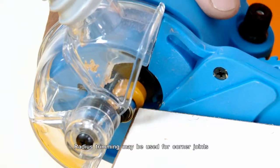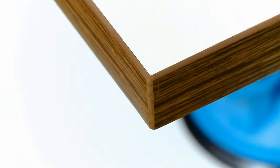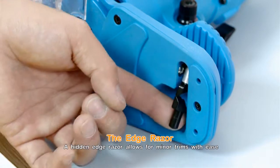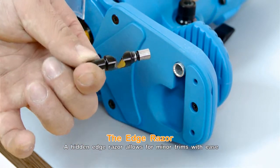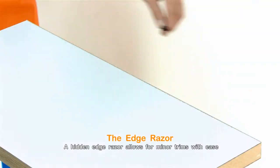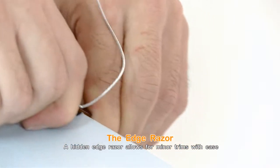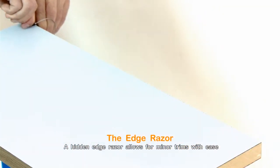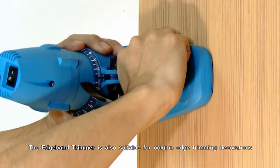Radius trimming may be used for corner joints. The Edge Razor. A hidden edge razor allows for minor trims with ease. The Edge Band Trimmer is also suitable for column edge trimming decoration.